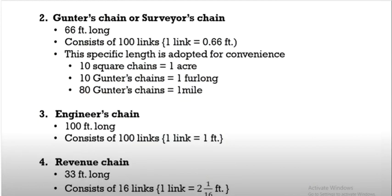Next, Gunter's chain. Gunter's chain is 66 feet long. Now we have 20 meter to 30 meter length, but Gunter's chain is 66 foot long and consists of 100 links. One link is 0.66 foot. This specific length is adopted for convenience. 10 square chains equals 1 acre, 10 Gunter's chains equals 1 furlong, 80 Gunter's chains equals 1 mile.